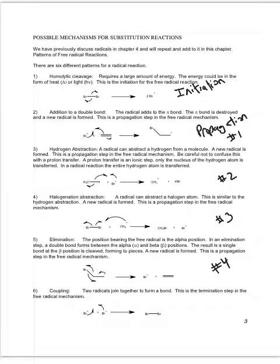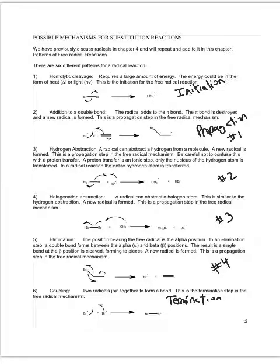The final step — the coupling or termination — is just like the initiator, where we have two electrons coming together to form a bond, killing off the free radical mechanism. The initiation and termination both have just two arrows needed. We have to be careful in all free radical reactions to draw the fish-hook arrow with just the one hook, not the double-headed arrow.